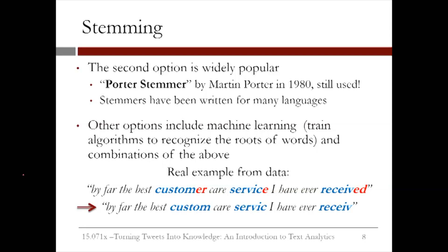As a real example from our data set, the phrase 'by far the best customer care service I have ever received' has three words that would be stemmed: 'customer,' 'service,' and 'received.' The 'er' would be removed in 'customer,' the 'e' would be removed in 'service,' and the 'ed' would be removed in 'received.' In the next video, we'll see how to run these preprocessing steps in R.